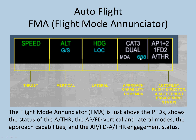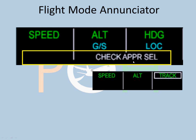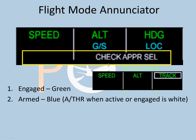Minimums — whatever you have set in the FMGS will show up here. The FMA has three lines. If it is green, it is engaged and active. Blue means armed — it is ready to become active or get engaged. So in this case, glide slope is armed, and once the glide slope signal is within the aircraft's range, it will get engaged.